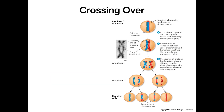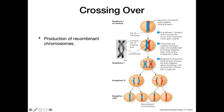Moving on to crossing over — crossing over is going to be the production of recombinant chromosomes. Crossing over is the exchange of genetic material between two non-sister partners of a homologous pair. We can see that taking place here: this red chromosome is exchanging parts of its genetic material with this non-sister blue chromosome, but they are still homologous to one another because they code for the same genes.